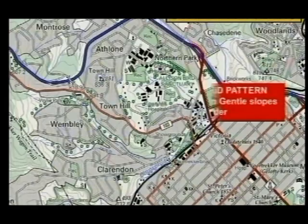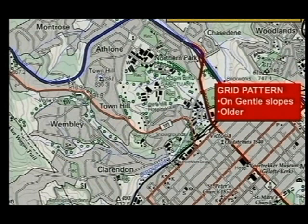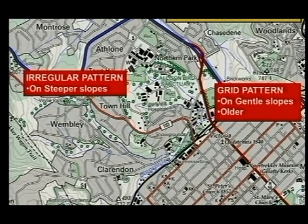Here we've got your grid pattern. Remember, you find this on your gentle slopes, and it's the older one of the patterns. Let's compare this to this one here — we've got the irregular pattern. Now compare the slope here: here we've got a contour running here.